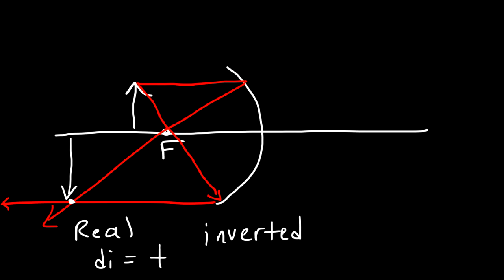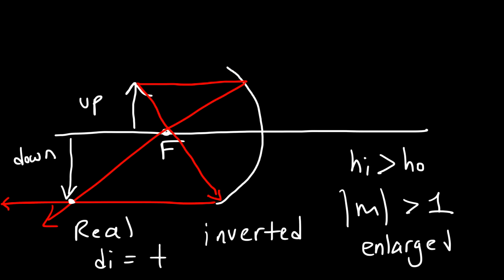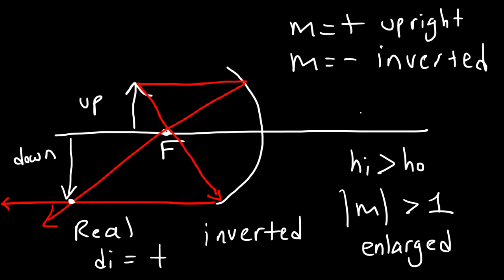Now the image is inverted — it's in the opposite direction of the object. The object is facing up, and the image is facing in a downward direction. Notice that the height of the image is greater than the height of the object. If that's the case, then the magnification's absolute value is greater than 1, so we have an enlarged image. If the magnification is positive, you have an upright image; if it's negative, you have an inverted image. So the magnification has to be negative in this case because the image is inverted.